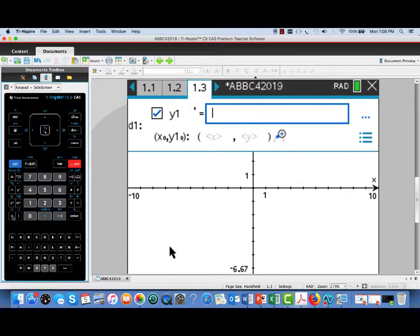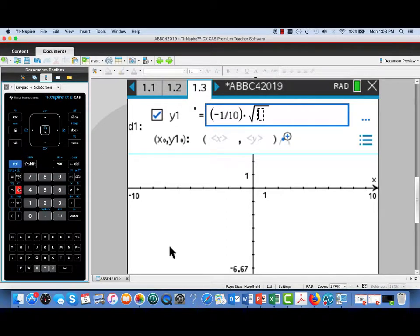Notice the format here. We have a dedicated dependent variable y1 prime, and we need to enter the differential equation that it satisfies. Now, in this case, it was negative one-tenth, and we're using y1 in place of h, so instead of the square root of h, I'll need to enter the square root of y1, referring back to the name we are giving to the dependent variable.